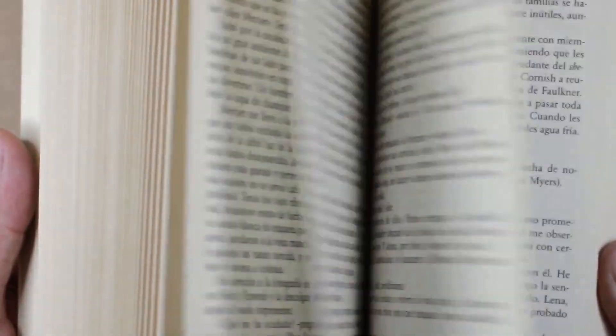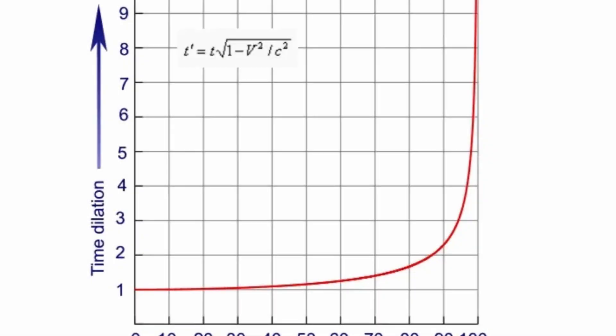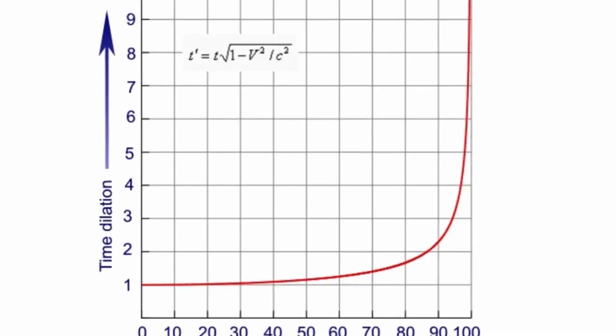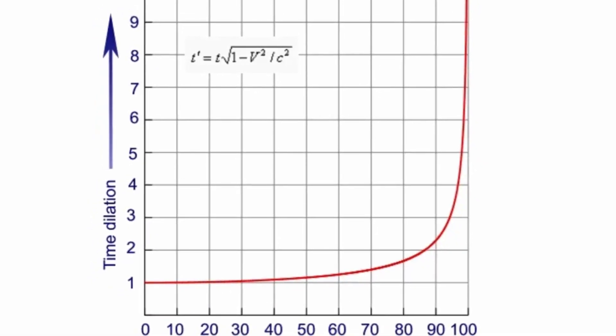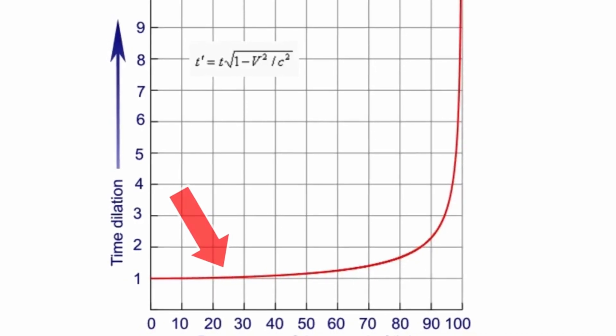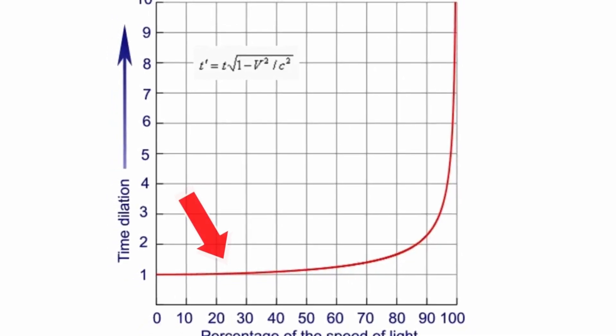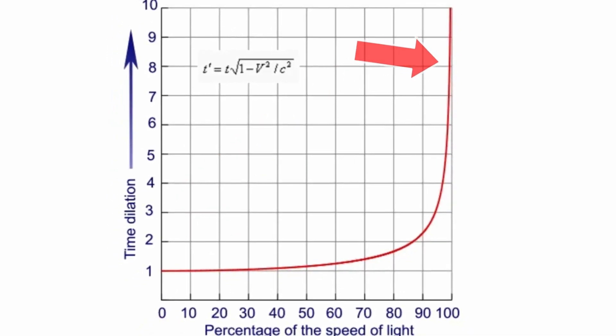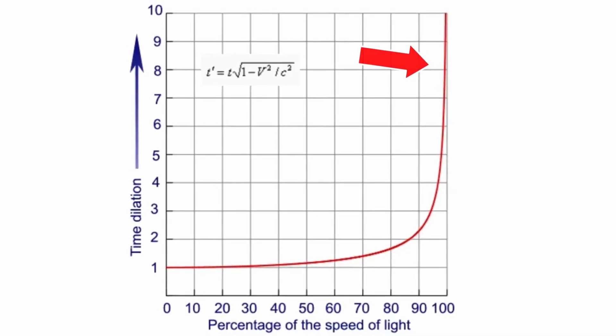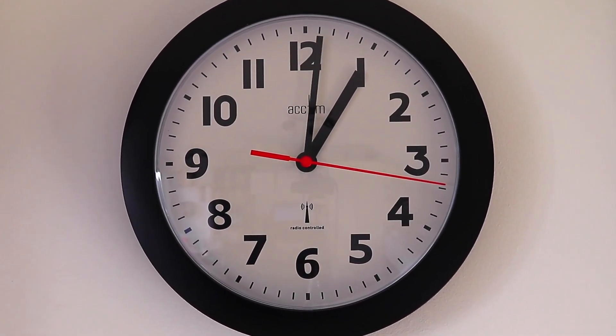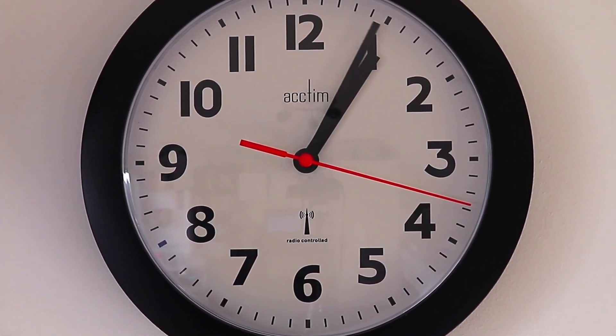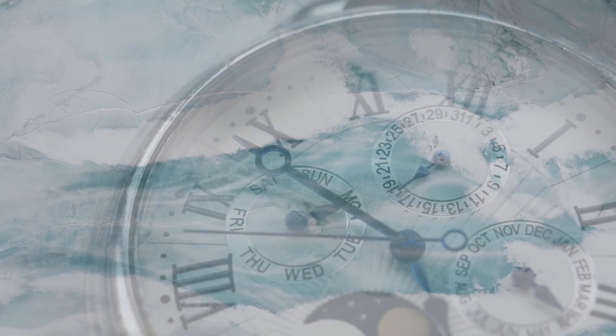To better understand how time dilation works, let's visualize it. Let's look at a simple graph that shows how time slows as an object moves faster. Notice how the curve remains shallow at first, but as the speed approaches the speed of light, it shoots up dramatically. At 90% of the speed of light, time slows significantly, and if we keep adding nines after the decimal, time slows to the point of absurdity — it practically freezes.